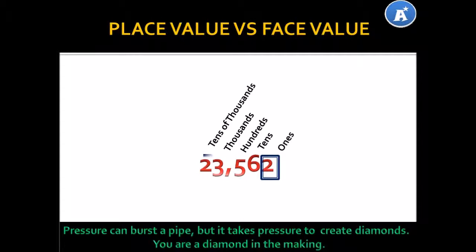The place value of the last 2 is 1's. Whereas, the place value of our first 2 is tens of thousands. So, the place value of a number is based on its position. Whereas, the face value of both 2's is simply 2. So, the face value of the number is the actual value of the number.